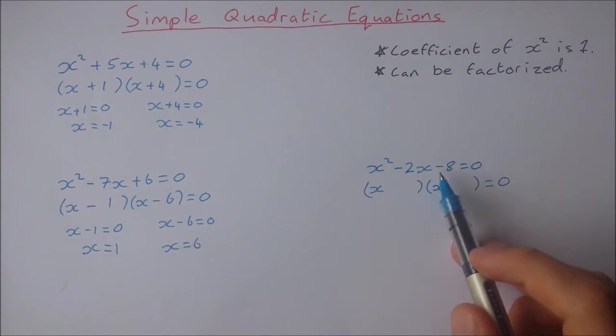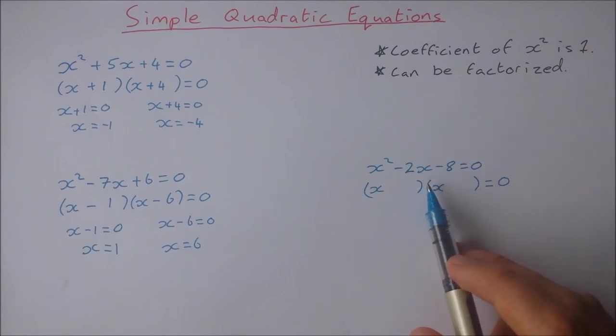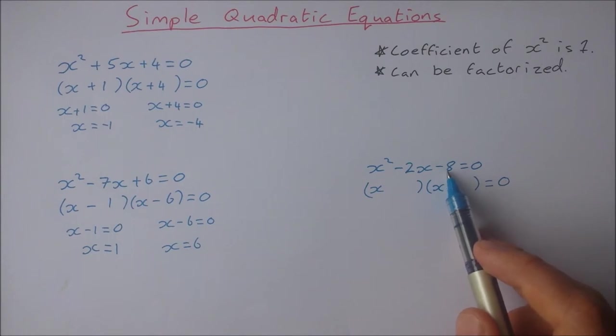Well, in this case, I'm going to look for a positive factor and a negative factor. For example, eight by minus one will give me minus eight, but eight minus one will give me seven. So that's not going to work.